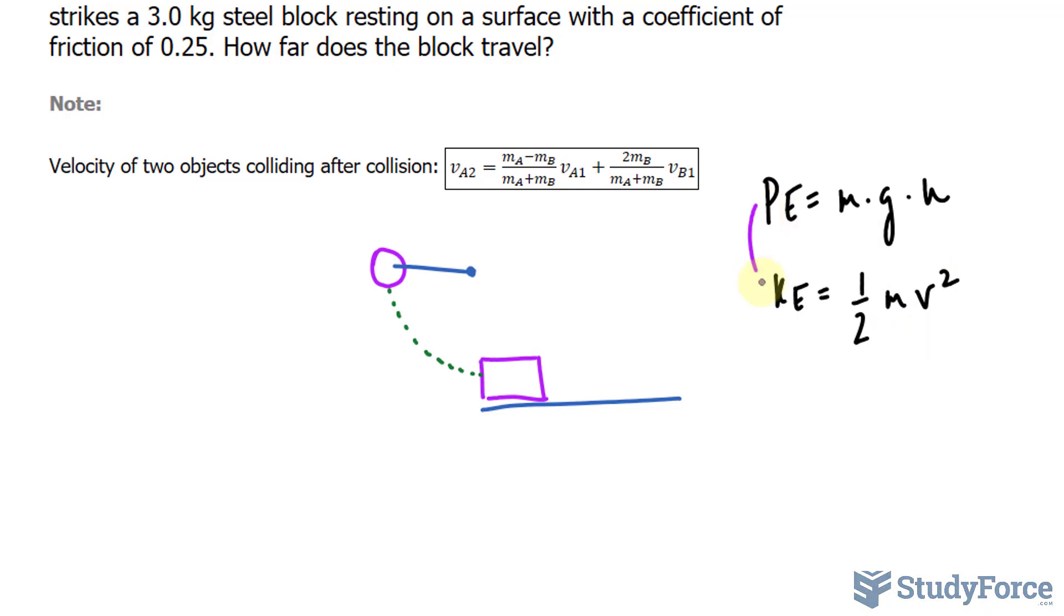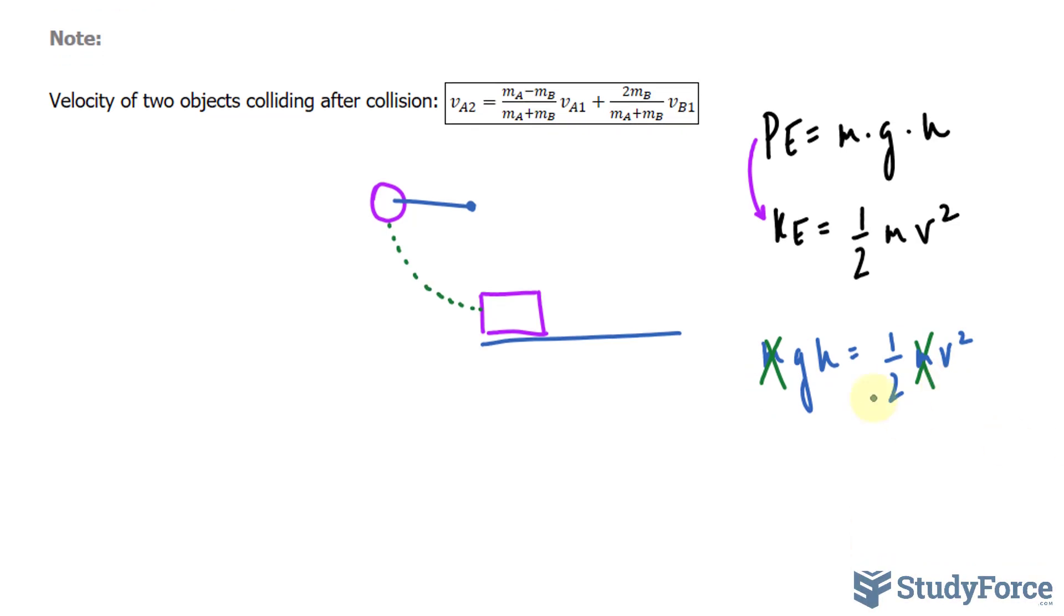Now because all of this potential energy is going into the kinetic energy, we can represent that mathematically by saying mgh is equal to half mv squared. Notice that I set these two expressions equal to each other, forming this equation. Now from here, you can see that the mass units will cancel out. And if we solve, we can actually come up with the velocity of this ball at this point.